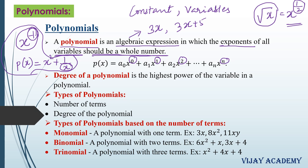So when all the exponents must be whole numbers, then such expressions are called as polynomials. Moving on to degree of a polynomial: the degree of a polynomial is actually the highest power of the variable in a polynomial. The highest power is called the degree of the polynomial.